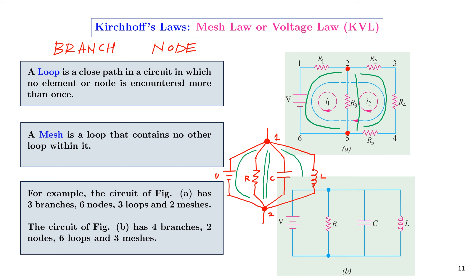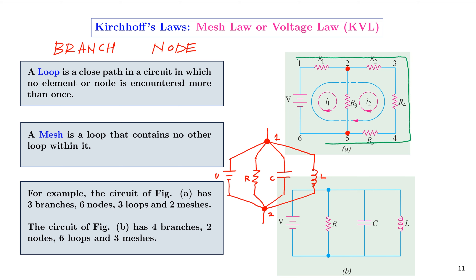A loop is defined as a closed path in a circuit in which no element or node is encountered more than once. In figure A, there are three loops. The first loop consists of R1, R2, R4, R5, and voltage source V. Inside that loop are two sub-loops: one consisting of R1, R3, and V, and the third loop consisting of R2, R4, R5, and R3. Altogether there are three loops for figure A.